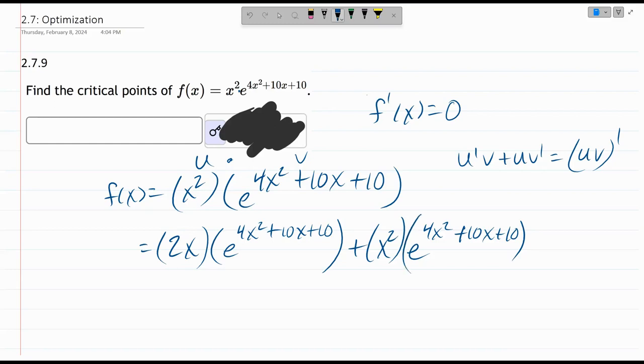But the chain rule says we now have to multiply by the derivative of the function up here. So that is 4x squared derivative is 8x to the first. Derivative 10x is 10. Derivative of any constant is zero. So we're left with this.